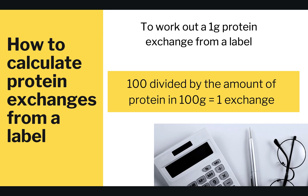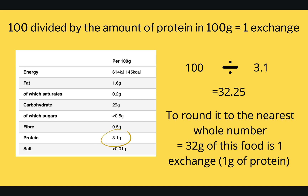How do you calculate protein exchanges from a label? To work out a 1 gram protein exchange we do a calculation: 100 divided by the amount of protein per 100 grams, and this gives us one exchange. I would get my calculator out for this. Looking at the same label with 3.1 grams of protein per 100 grams, we do 100 divided by 3.1, which gives us 32.25. We round to the nearest whole number, so 32 grams of this food is one exchange, or one gram of protein.